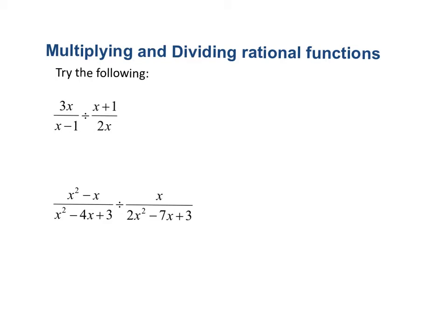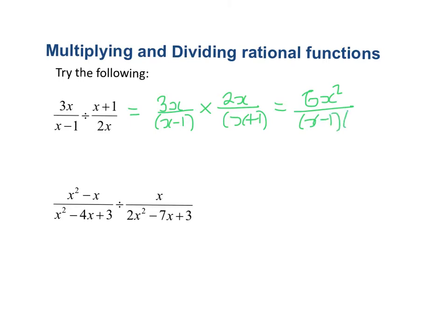Here are a couple more examples to try — pause the video and check your answers. For the first one: 3x/(x−1) ÷ ... change the sign to times and find the reciprocal to get 2x/(x+1). Multiplying through gives 6x² over (x−1)(x+1), which can't be simplified further. It's worth noting you don't need to expand these brackets — keeping them in factorised form makes it easier to see whether simplification is needed.